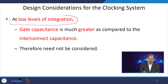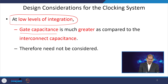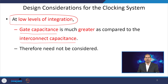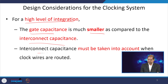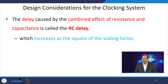There are two types of integration levels: low level integration and high level integration. In low level integration, the gate capacitance is the dominant factor compared to the interconnect capacitance, because the area is small and interconnect distance is small, so interconnect capacitance is ignored. In high level integration, the gate capacitance is smaller compared to interconnect capacitance as the chip area increases, and the interconnect distance increases too. Then the interconnect capacitance must be taken into account when clock wires are routed. We need to consider the combined effect of resistance and capacitance of the interconnect.